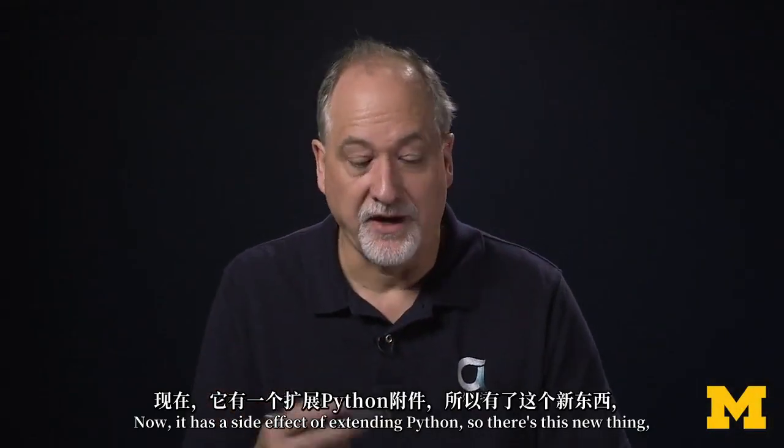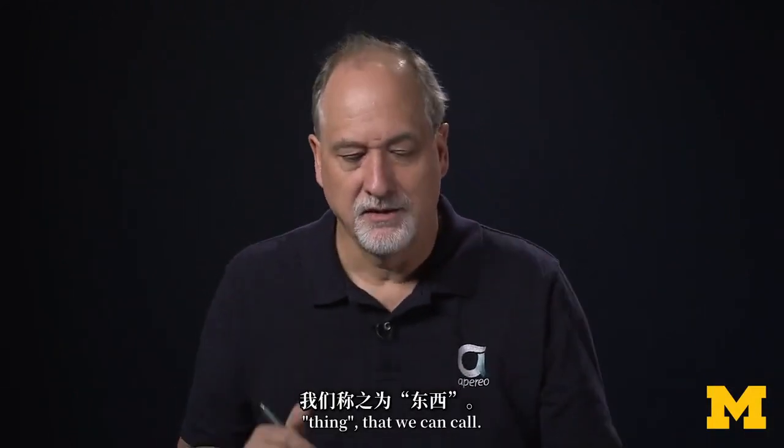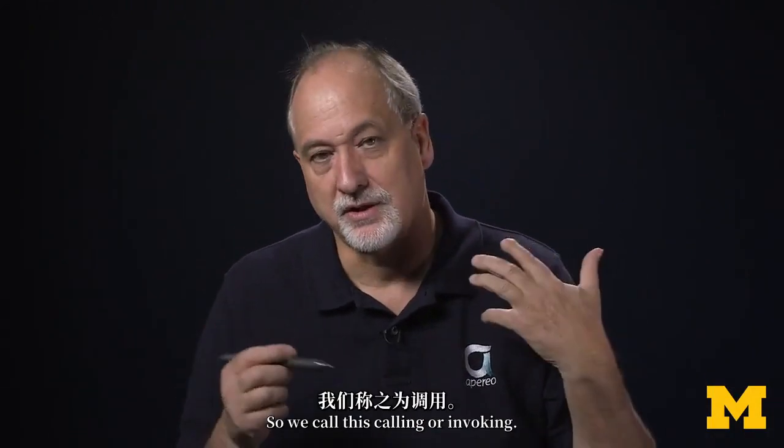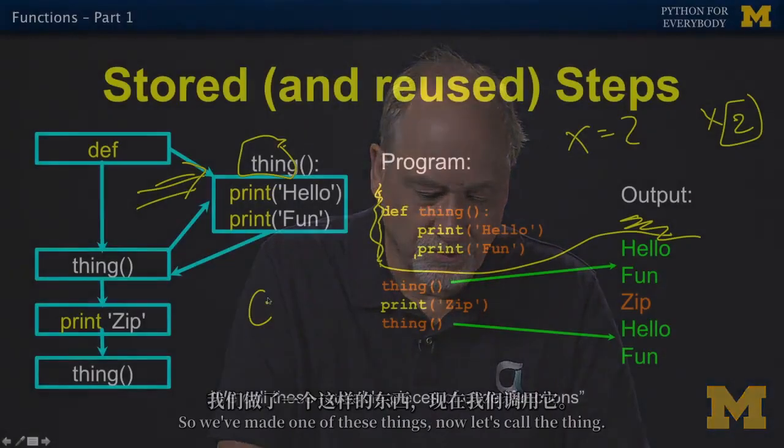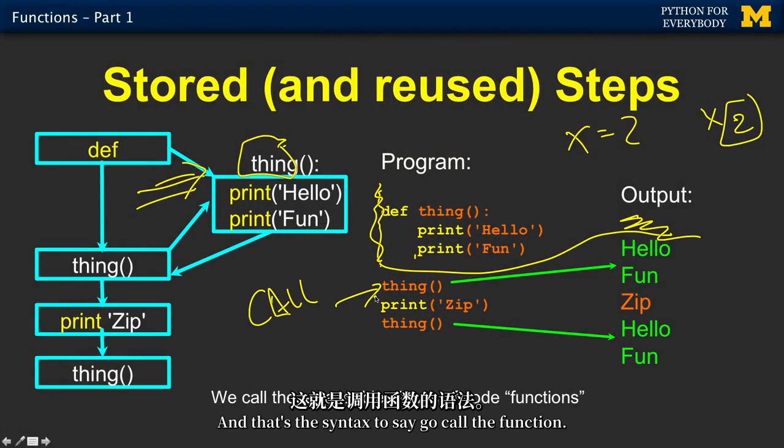Now, it has a side effect of extending Python. So there's this new thing, thing, that we can call. So we call this calling or invoking. So we've made one of these things. Now, let's call the thing. So we say thing parenthesis. And that's the syntax to say go call the function.